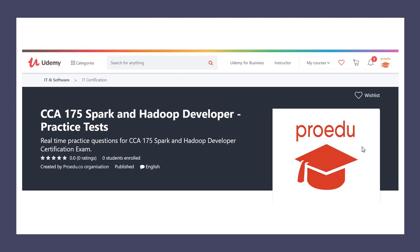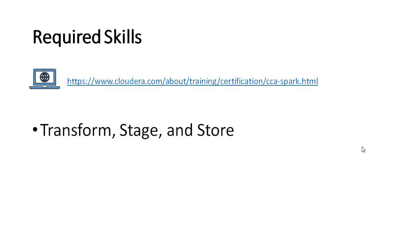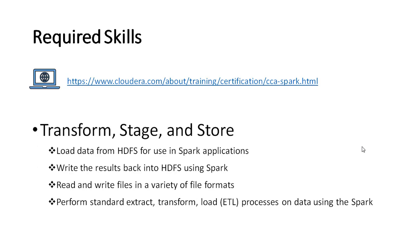So what are the required skills for CCA175? The relevant information is given on Cloudera's website. There are three sections of required skills. The first section is Transform, Stage and Store. This section requires that a candidate should know different ways of loading data into Spark and writing the results back into HDFS using Spark. The candidate should know how to read and write files in a variety of file formats — for example, JSON, CSV, Parquet, Avro, ORC, and many more.